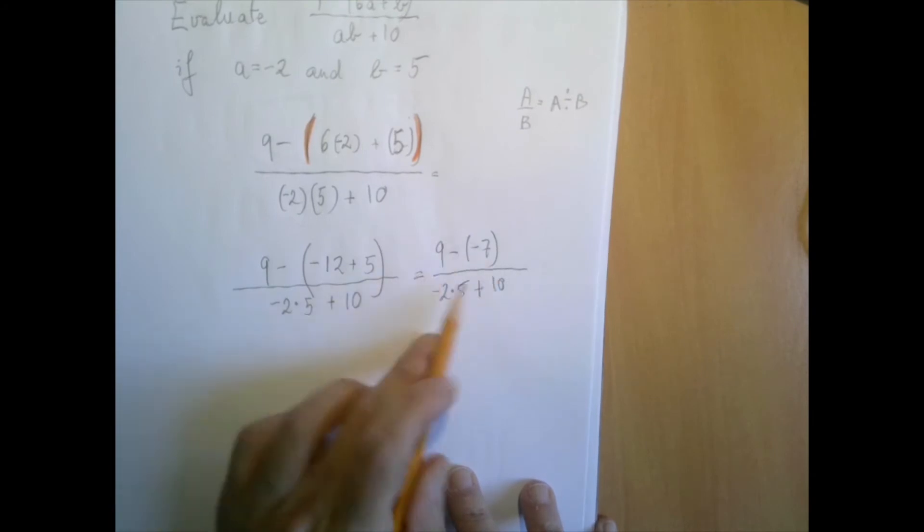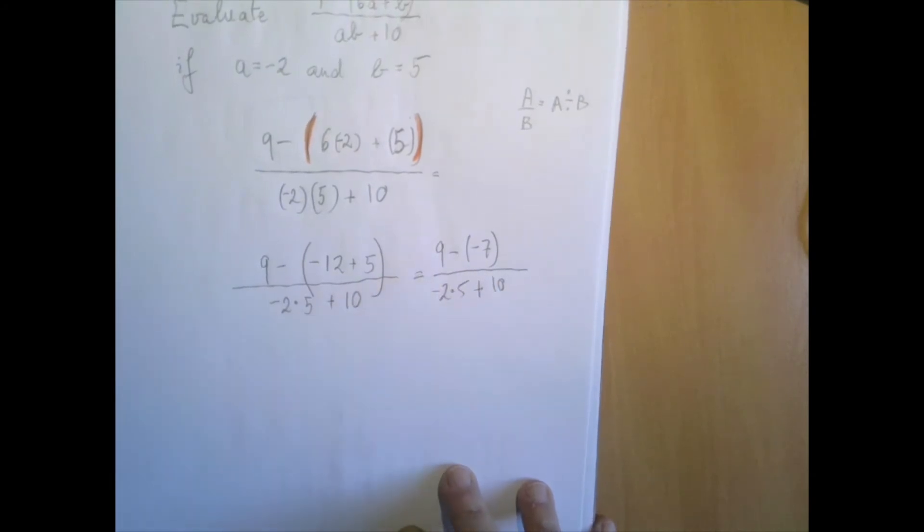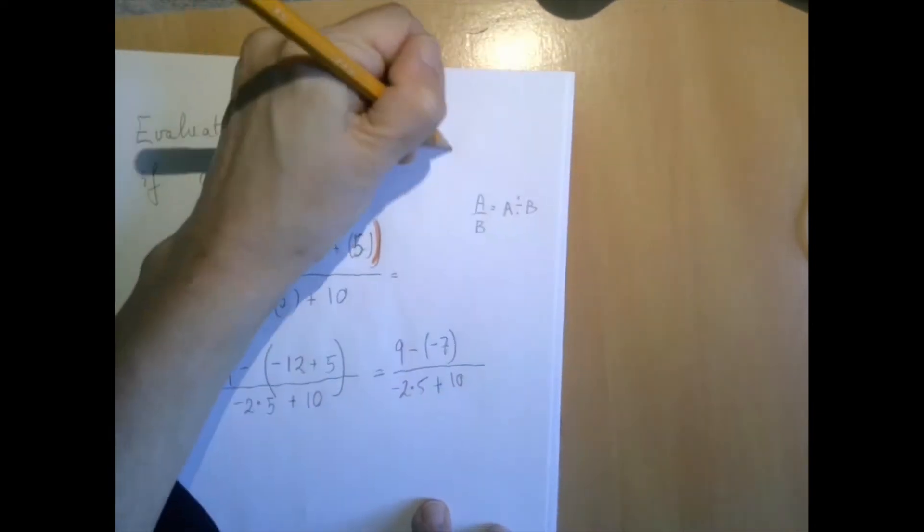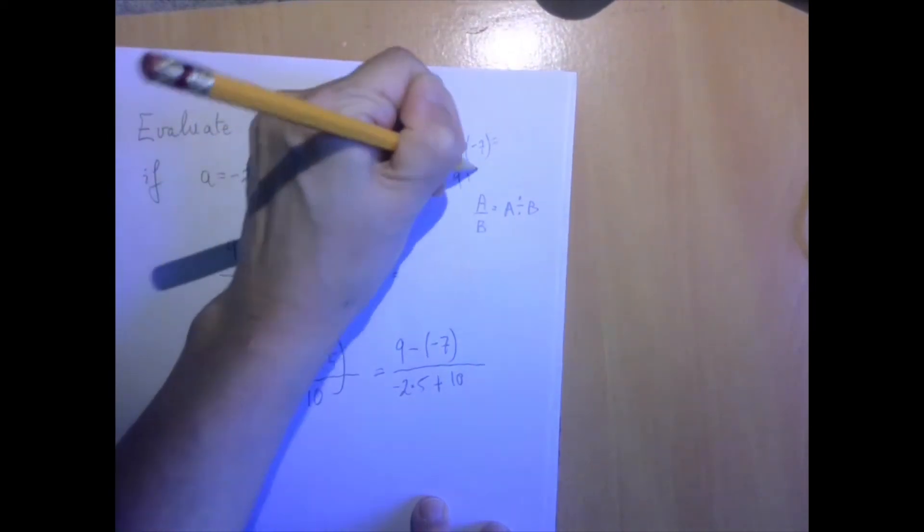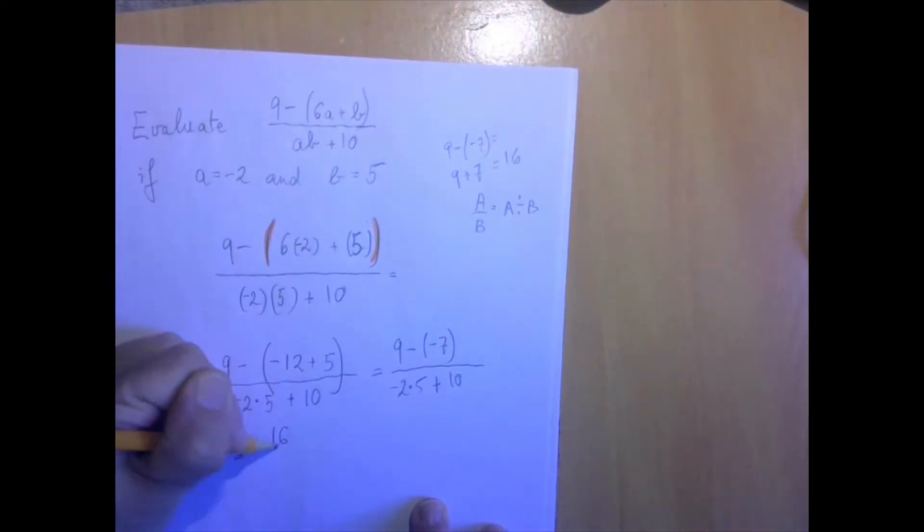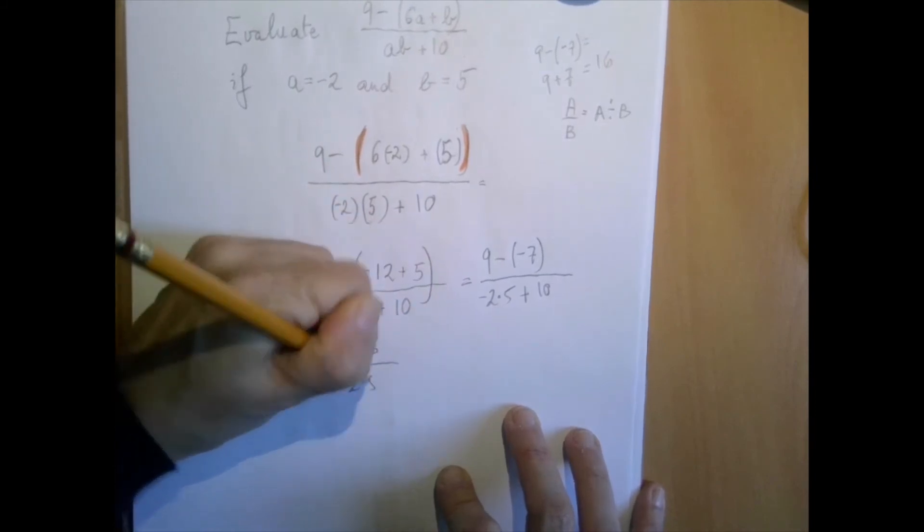We're still working upstairs. To subtract is to add the opposite. So 9 minus negative 7 is the same as 9 plus 7, which is 16. We can do this on the margin. 9 minus negative 7. To subtract is to add the opposite. So we have 16 divided by negative 2 times 5 plus 10.